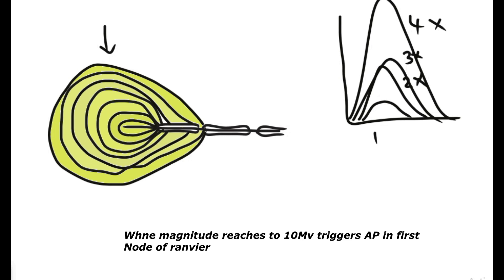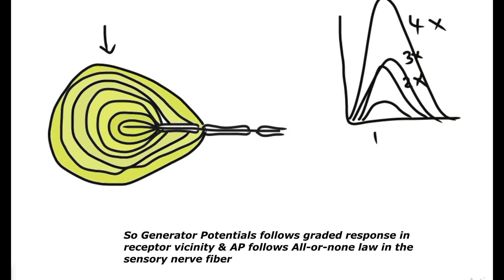So that is how the generator potential and action potential are entirely different. Generator potential is produced in the receptor itself, the vicinity of the receptor, and the action potential is produced in the first node of Ranvier and therefore propagates towards the brain. The process of the action potential in the node of Ranvier absolutely follows the all-or-none law of the sensory fiber.